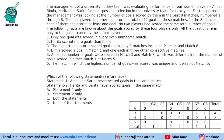Question 3: Which of the following statements is or are true? Statement: Amla and Sarita never scored goals in the same match. This is true because if they scored in the same match, the total for that match would become 2 or 3. Statement: Harita and Sarita never scored goals in the same match. Since Harita scored only in matches 1, 4 and 8, Sarita can never score in those same matches. Both statements are true.